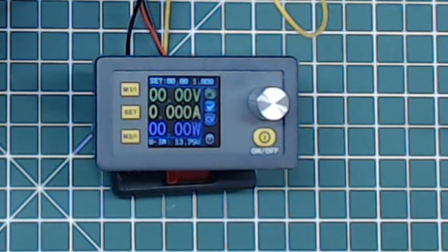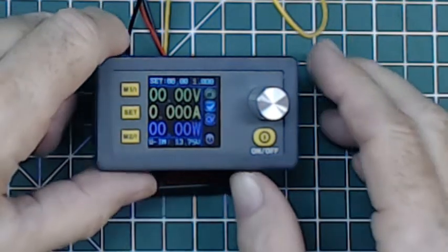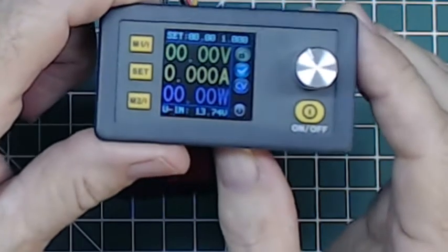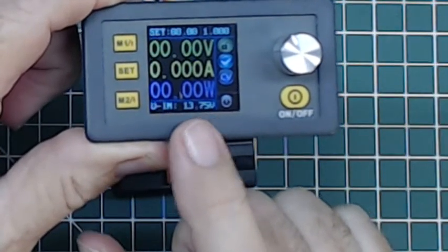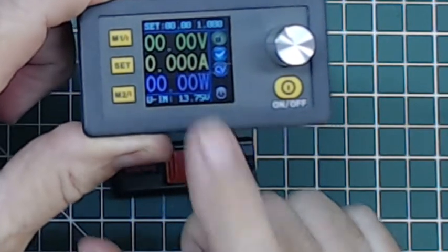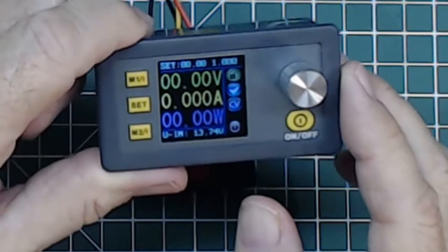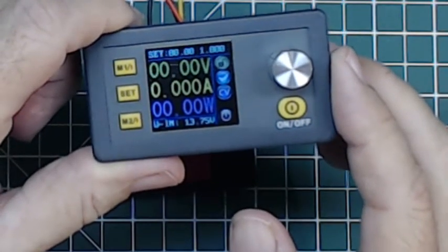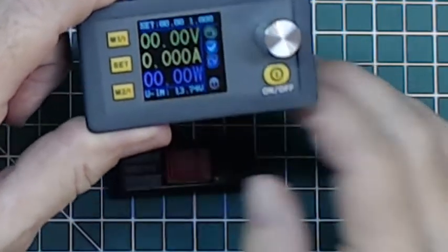For instance, I've got it hooked right now to one of my radio power supplies that puts out 13.8 volts, and I can adjust the output voltage down from there. If we look closely here, you can see on the bottom it tells you the voltage input—13.75 volts from my power supply. Then I can set the output voltage and limit the output current.